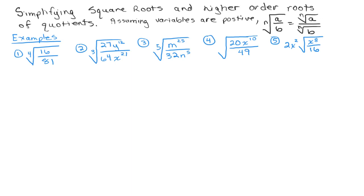We have the fourth root of 16 over 81, so that's the same thing as the fourth root of the numerator over the fourth root of the denominator. And the fourth root of 16 is 2, and the fourth root of 81 is 3. So that's our answer.